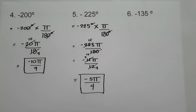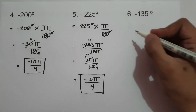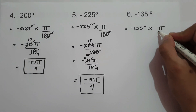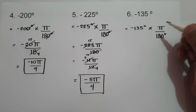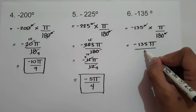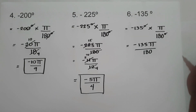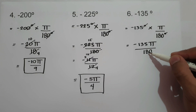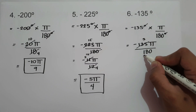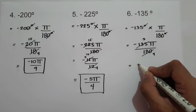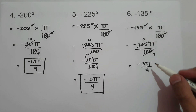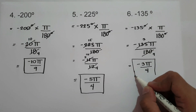On number 6, we have negative 135 degrees. So we have negative 135 degrees times pi over 180 degrees. Cancel the degree symbol, giving us negative 135 pi over 180. Since 135 and 180 are divisible by 45, negative 135 becomes 3 and 180 becomes 4. So negative 135 degrees in radians is negative 3 pi over 4.